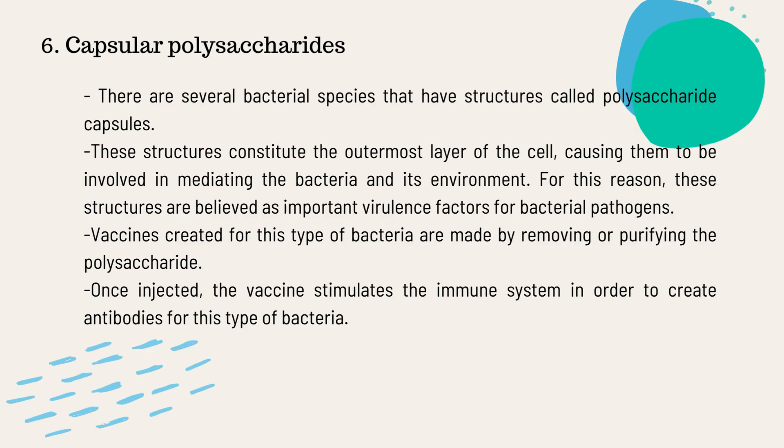The sixth type of vaccine is the capsular polysaccharide vaccine. This kind of vaccine is used to counter the type of bacteria that contains structures known as capsular polysaccharide capsules. These polysaccharide capsules constitute the outermost layer of the cells, causing them to be involved in mediating the bacteria in its environment, and they are believed to have important virulence factors for bacterial pathogens. This vaccine is usually created by removing or purifying the polysaccharide that encapsulates the bacteria, and once injected, it stimulates the immune system to create antibodies for this type of bacteria.